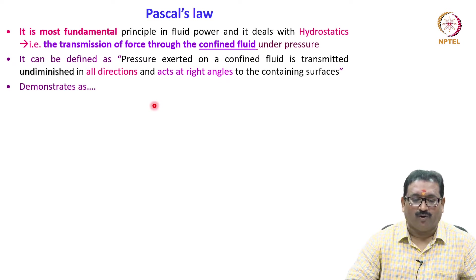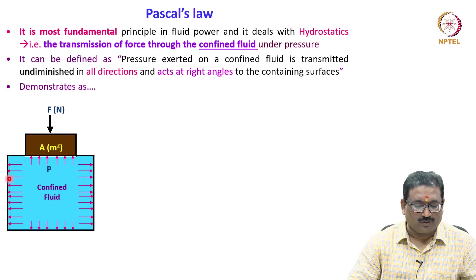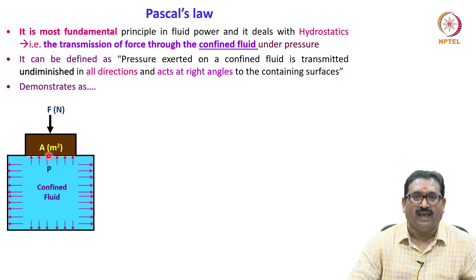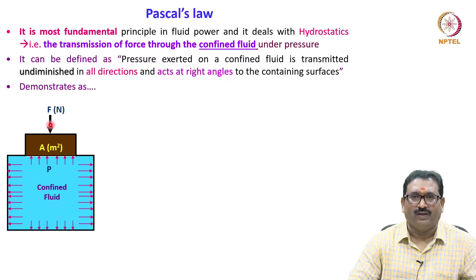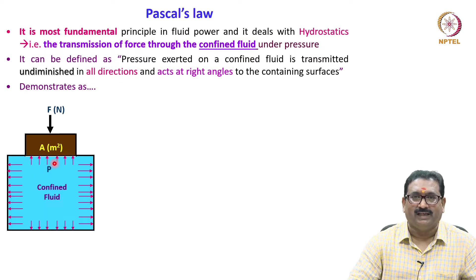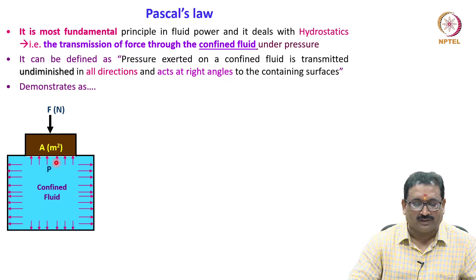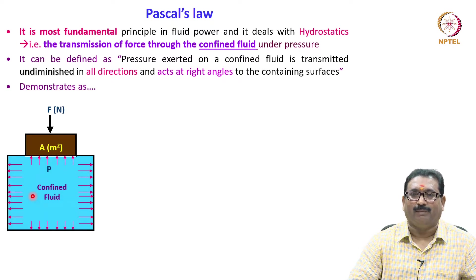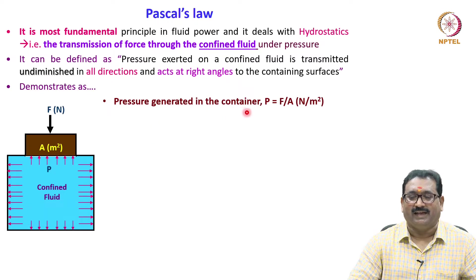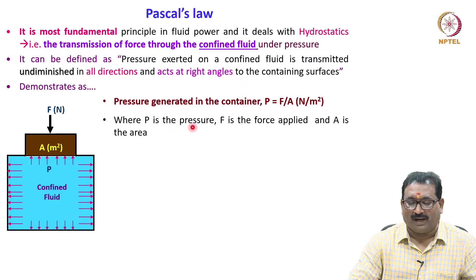It is easily demonstrated as follows. Take a closed container — a cylinder fitted with a piston, what we call a plunger with area A. Apply force F on the plunger, which in turn generates pressure P, because pressure is force divided by area. The generated pressure is transmitted undiminished and acts perpendicular to the wall surfaces. The pressure in the container is P equal to F by A, where P is pressure, F is the force applied, and A is the area.